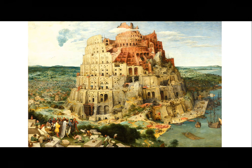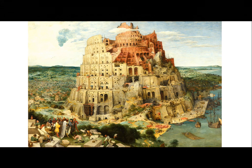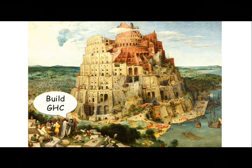I want to end with this painting by Pieter Bruegel, which nicely illustrates the complexities we deal with in build systems — huge engineering artifacts, many builders that speak different languages that need to be orchestrated, and a king ordering the construction. That is me, asking for a placement at Microsoft Research, and the king says 'build GHC'. Thank you.